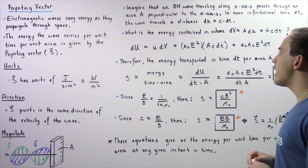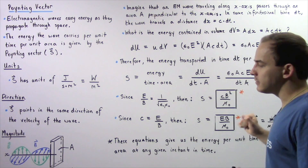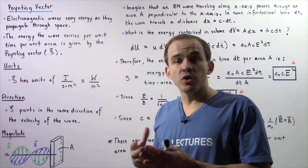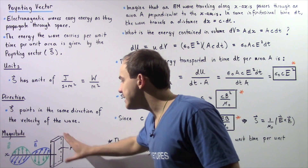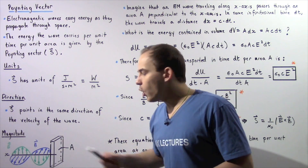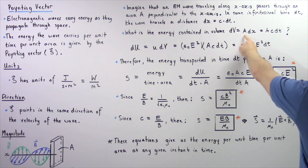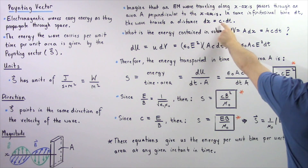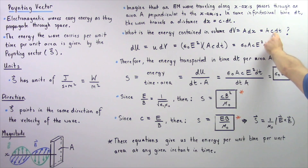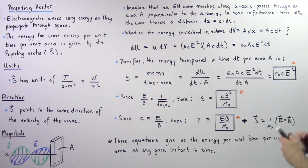Now, what is the energy contained in an infinitely small volume dV, where dV represents the volume inside this region as the wave travels through it? dV is equal to the area A multiplied by the infinitely small width dx, where dx equals c times dt. So the infinitely small volume dV equals A multiplied by the speed of electromagnetic radiation multiplied by dt.